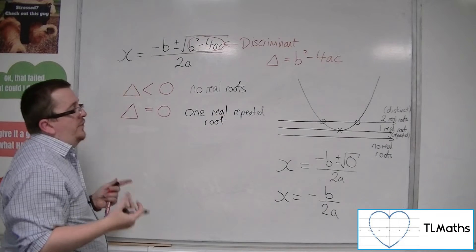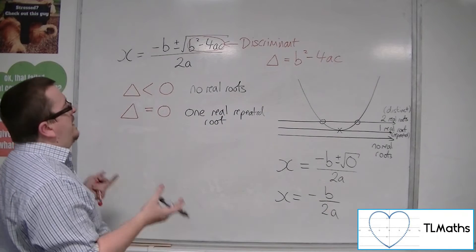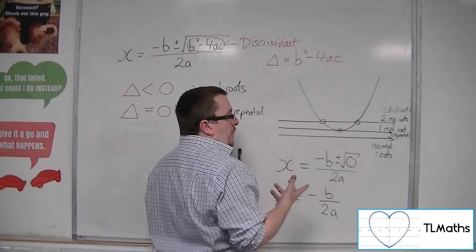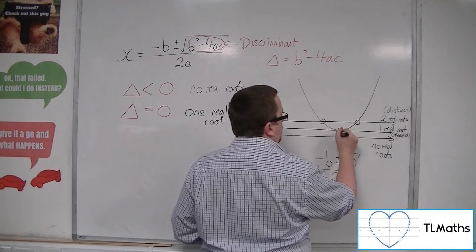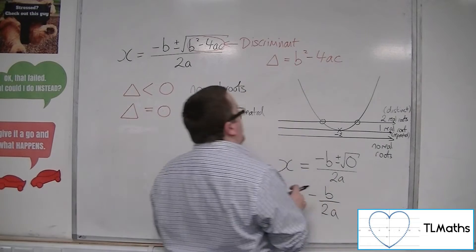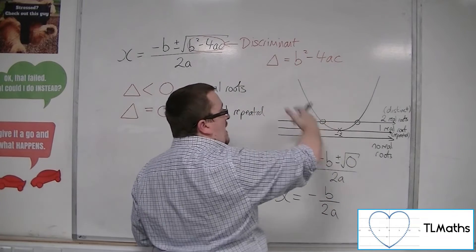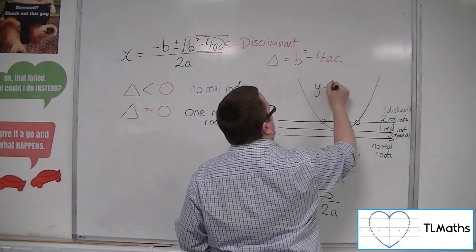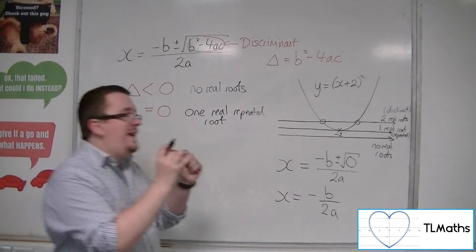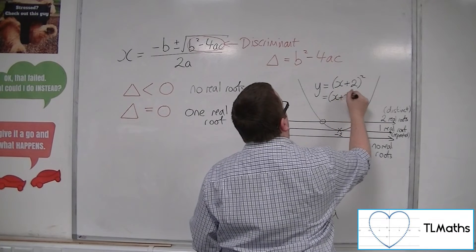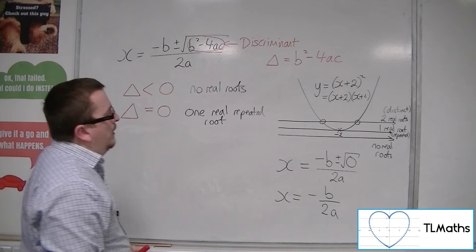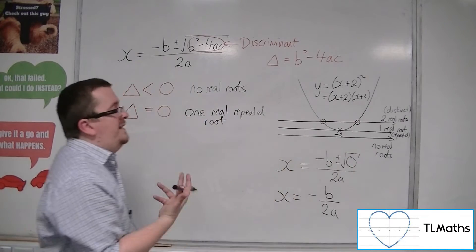Now why do we say that it's repeated? Now that's a particularly good question. The reason why is that if this value was, let's say, minus 2, then I would know that if this was a translation of the x squared curve, this curve would have the equation y is equal to x plus 2 squared. So it has this repeated root, as we say, because it's like a repeated factor. So that's where this idea of a repeated root comes from.